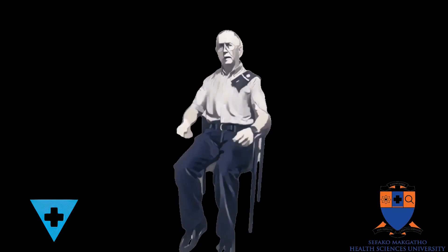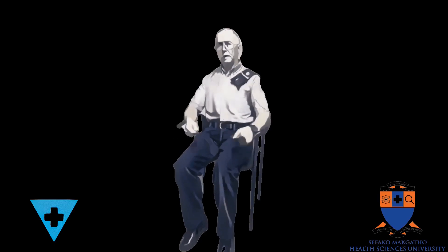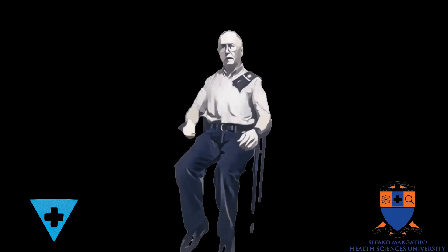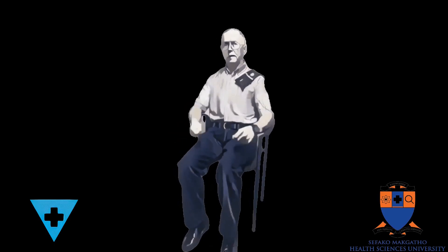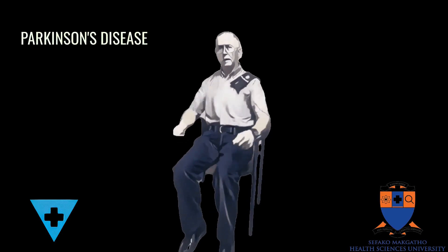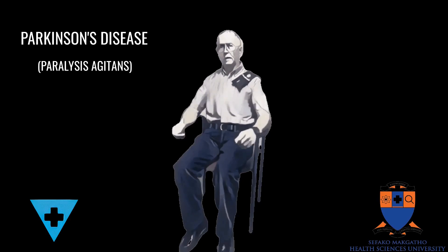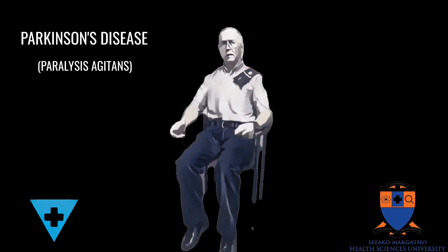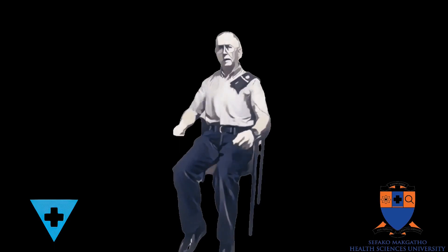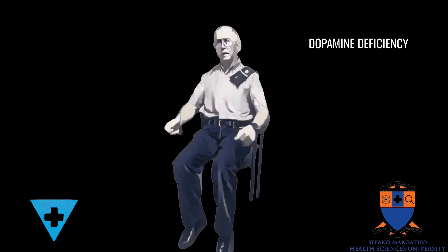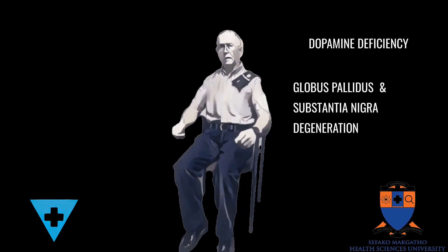Basal nuclei lesions cause muscular tone disorders and aberrant involuntary motions or dyskinesias. Parkinson's is the most famous. The other name is paralysis agitans. It causes muscular rigidity, alternating resting tremors and inactivity. Dopamine deficiency causes globus pallidus and substantia nigra degeneration.